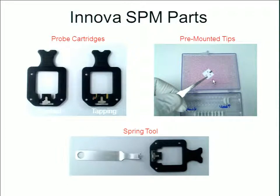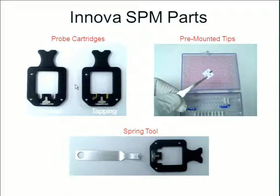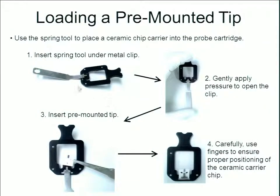That silicon chip is glued onto a ceramic piece called a chip carrier. The chip carrier has three small holes and basically snaps into place below a spring. You open this with a spring tool and snap in the chip carrier — which is glued to the chip containing your cantilever and probe. There are different types of probe cartridges: one for contact mode, and for tapping mode, one with a small piezoelectric and some electrical contacts.